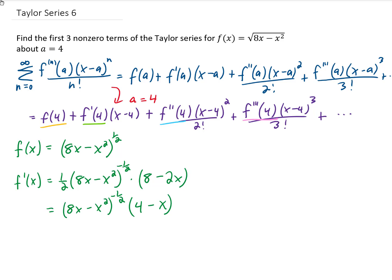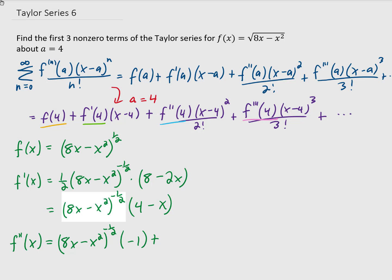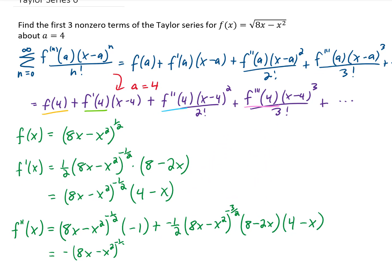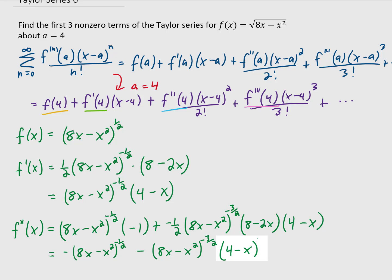We are asked for the first three non-zero terms, so we're going to have to differentiate at least one more time. To find the second derivative, we're going to need to use the product rule. We copy down the first term, take the derivative of the second term (which is just negative 1), then take the derivative of the first term using the power rule and chain rule, and copy down the second term. Simplifying by distributing 1/2 into 8 minus 2x again, we can see we now have two terms that are both 4 minus x, so we call that 4 minus x squared.